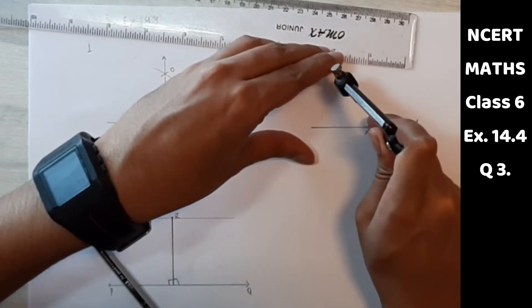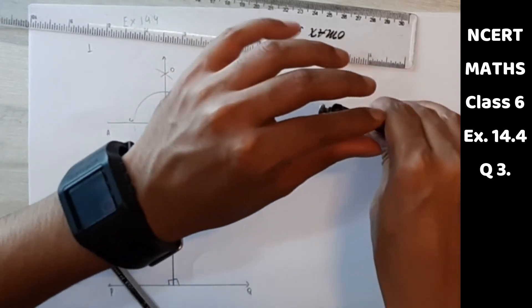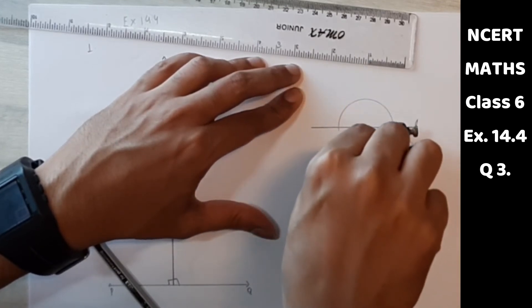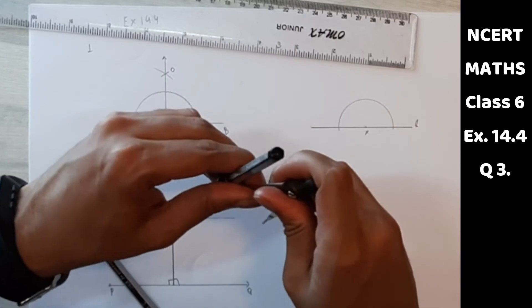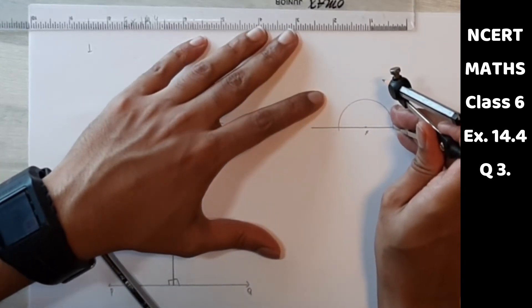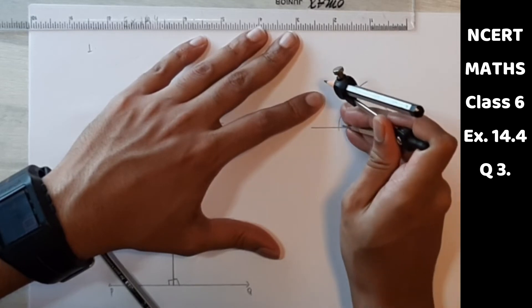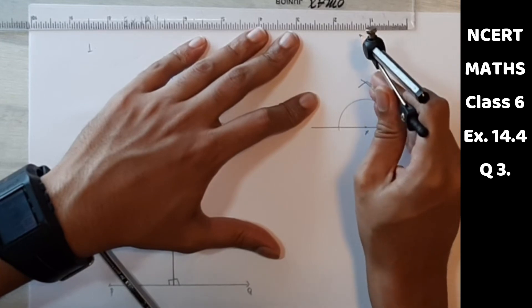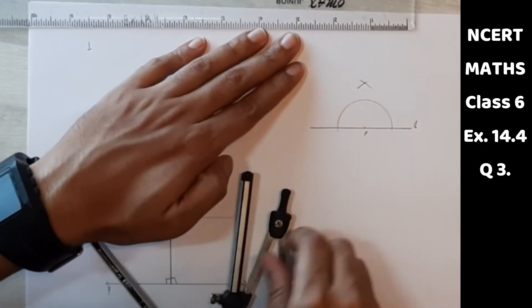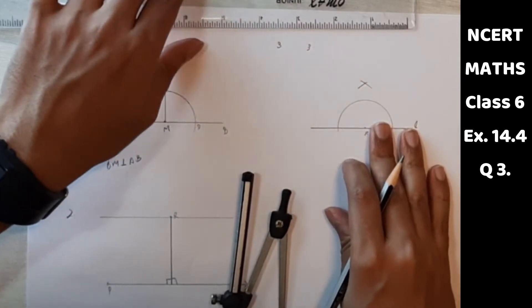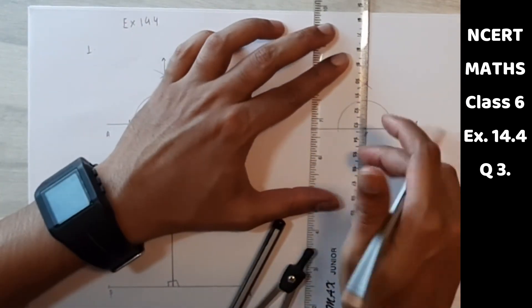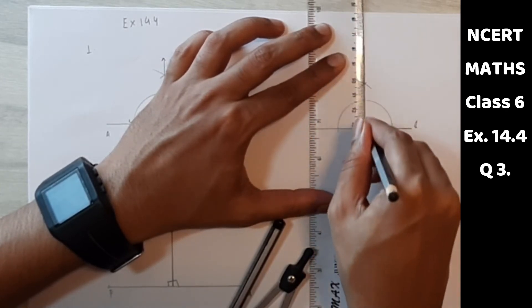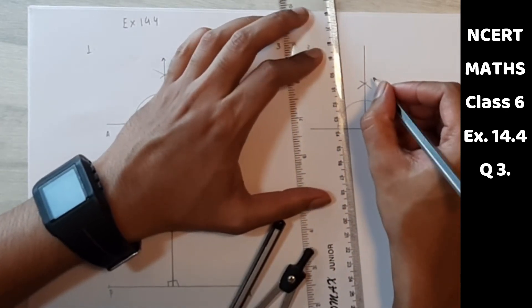So we will make an arc. Now we will mark a perpendicular point from X. Now we will mark this as X, Y.